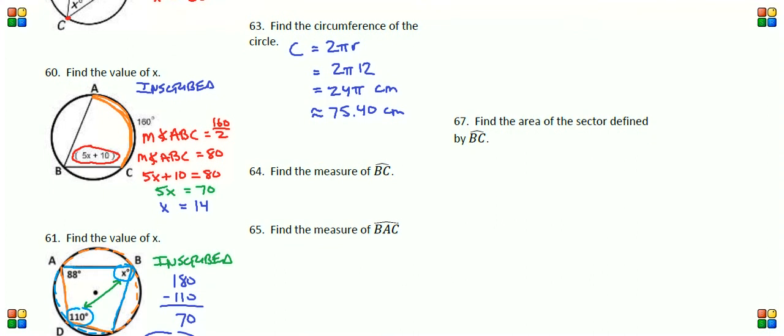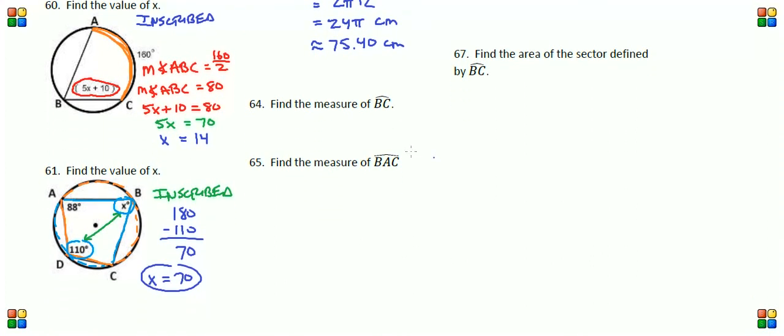Question number 64. Find the measure of arc BC. Measure means degrees. We're not looking for the length of the arc, we're looking for the degrees of the arc.